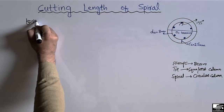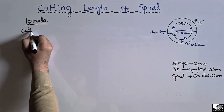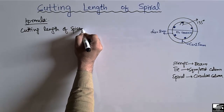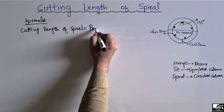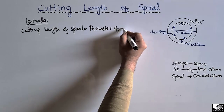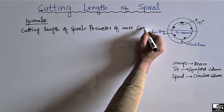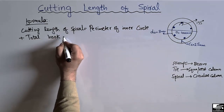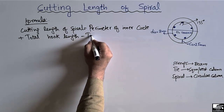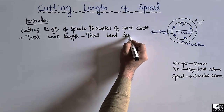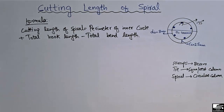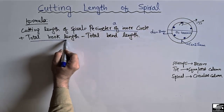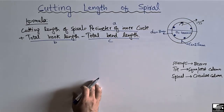By knowing this data we can find out the cutting length of the spiral using the formula: Cutting Length of Spiral = Perimeter of Inner Circle + Total Hook Length − Total Bend Length. There are three unknowns in this formula: A is the perimeter of the inner circle, B is the total hook length, and C is the total bend length.